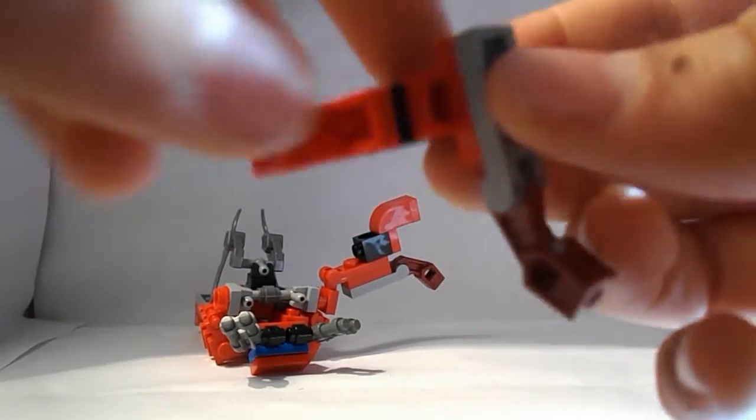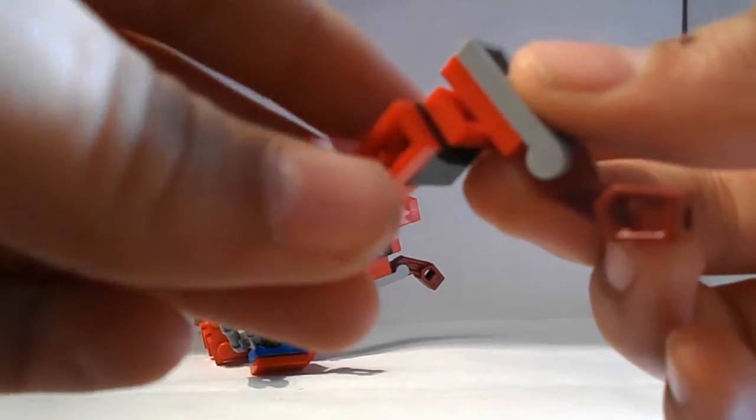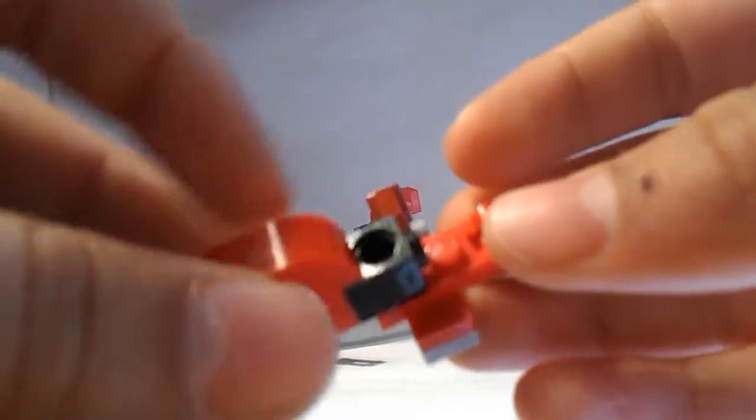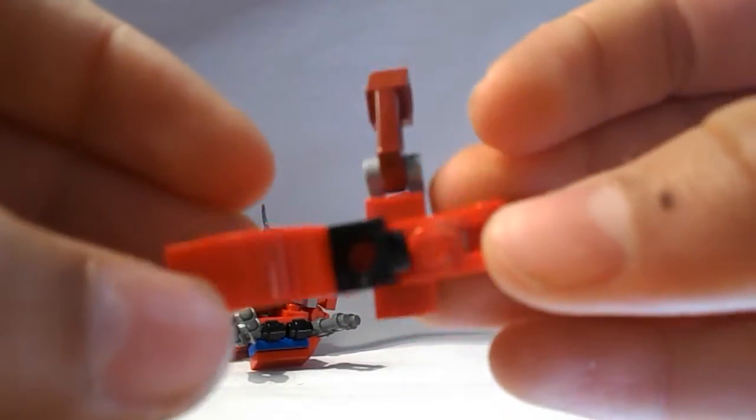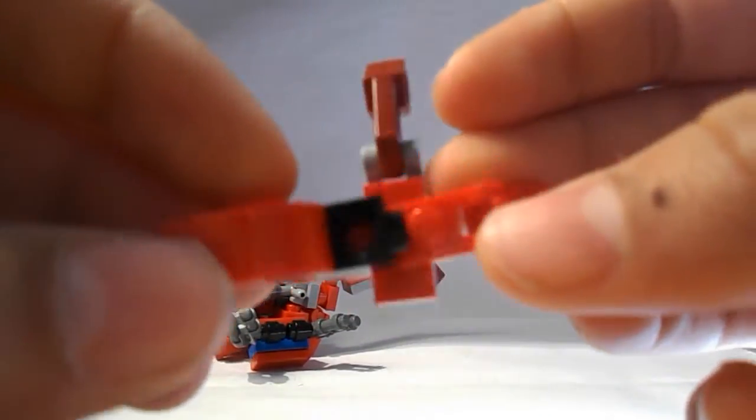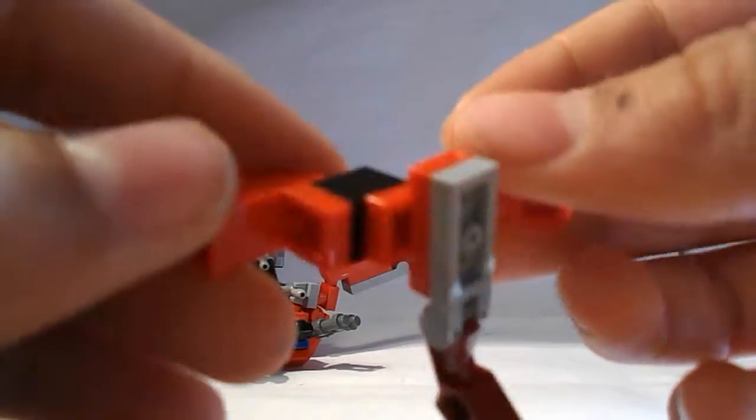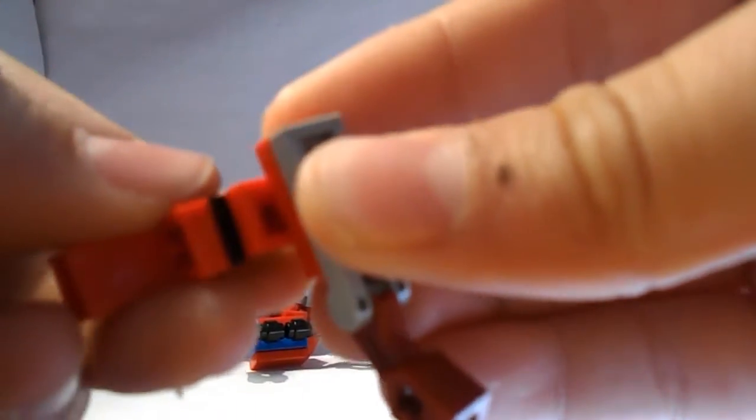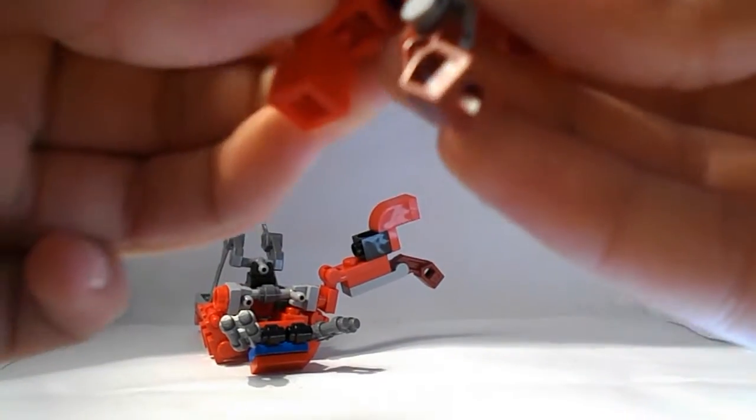Then what you're going to do with this is you're going to rotate this piece. This piece is on—I don't even know what to call it—one of those one by one bricks with the holes in the middle. And it's going to rotate down also.